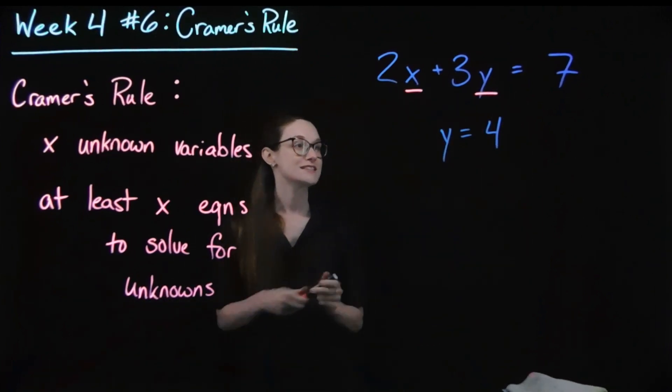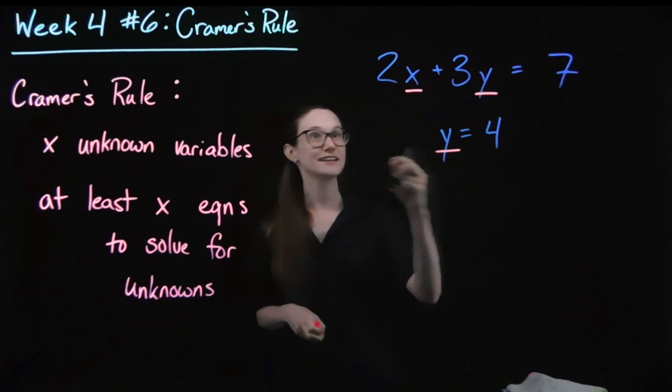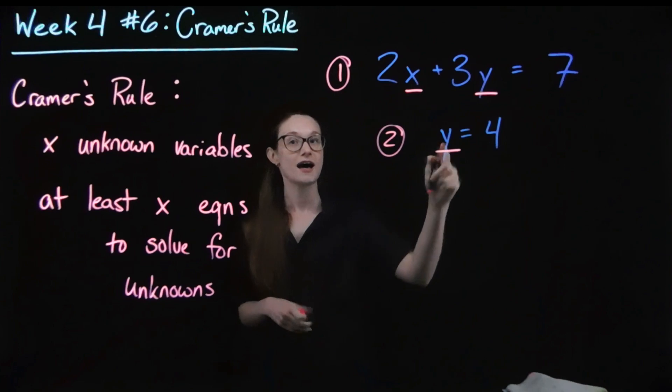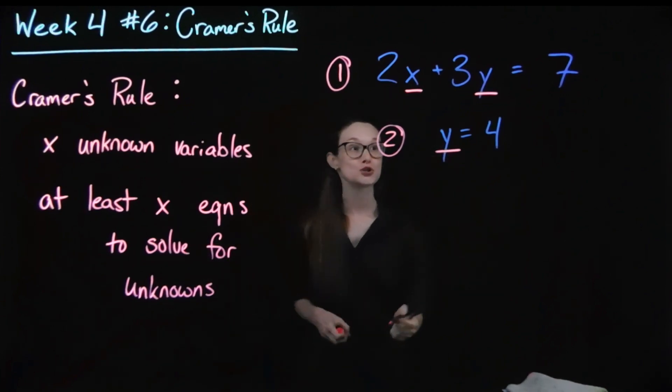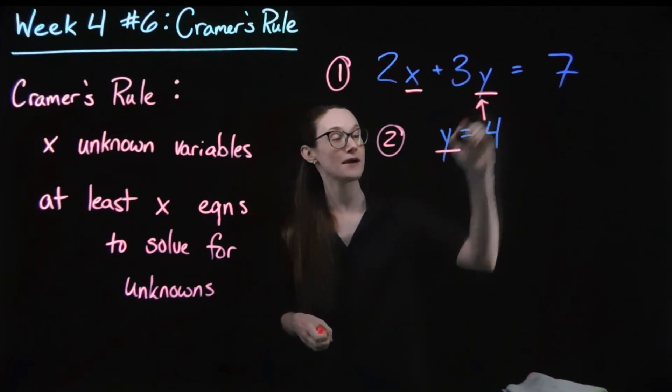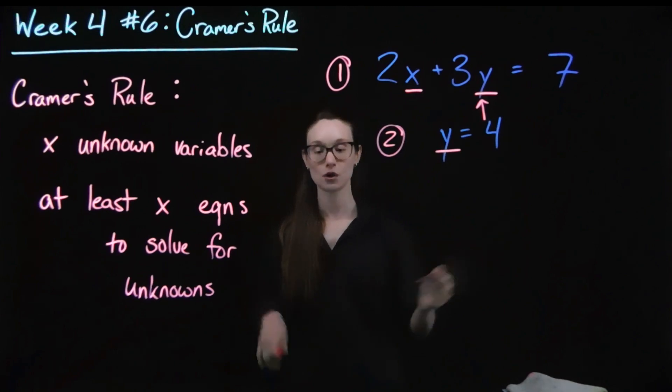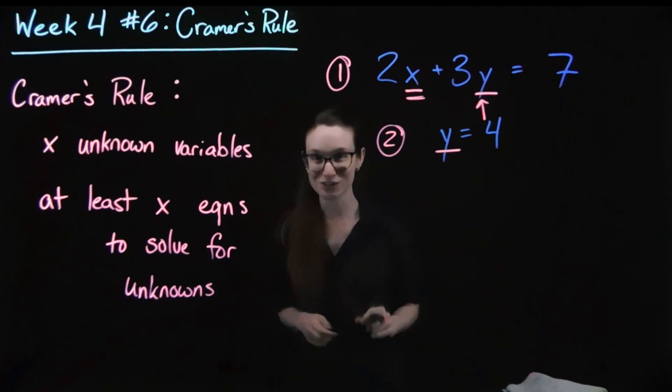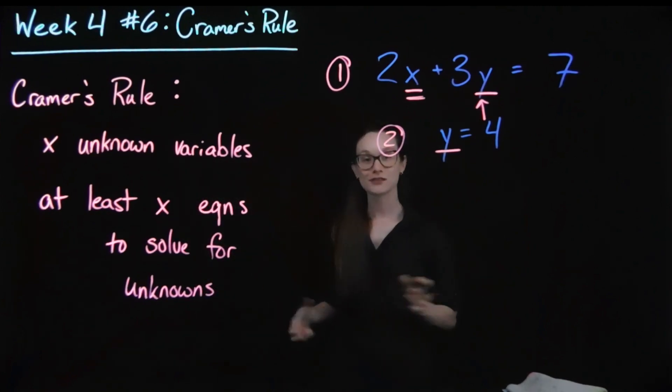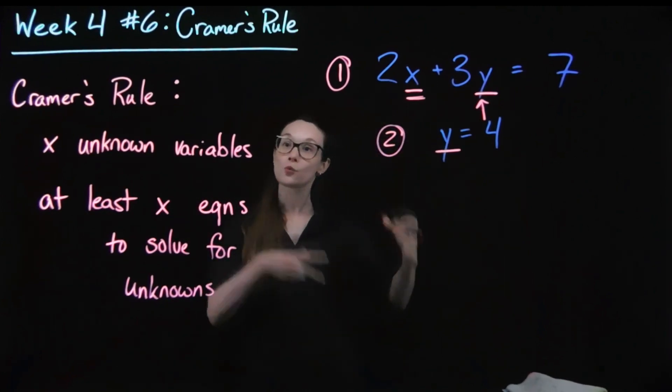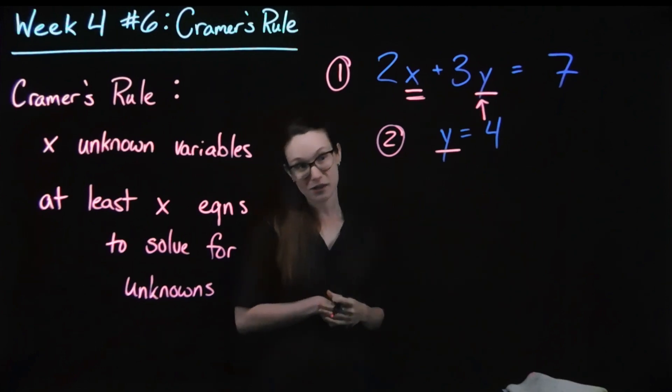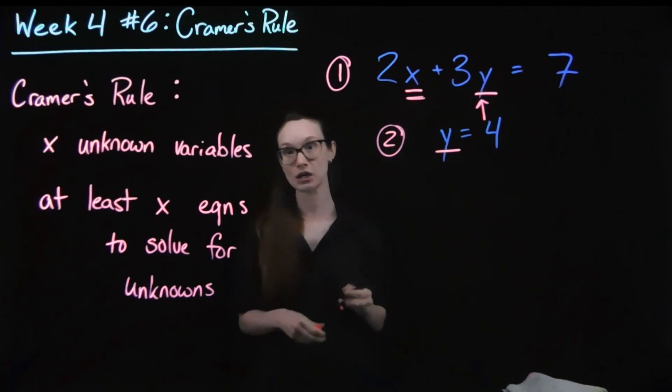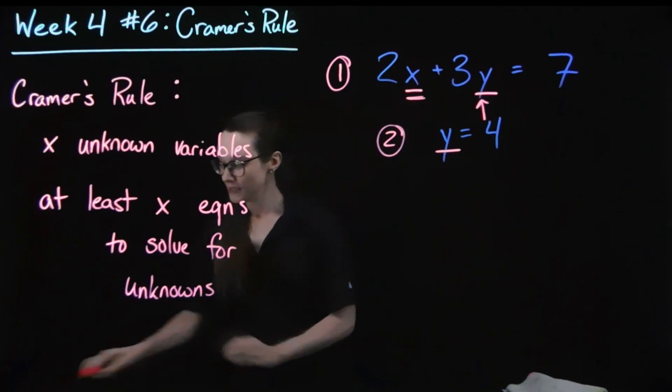Now, since I have a second equation, equation 1 and equation 2, I could use substitution, plugging in my value of 4 for Y, which leaves me only one variable. Going back to week 4, lesson 1, solving for one unknown in a single equation. Once I've substituted it in, it becomes the only unknown.